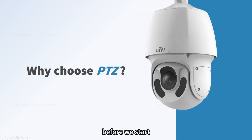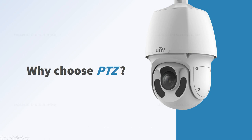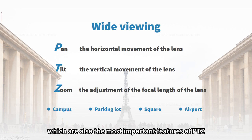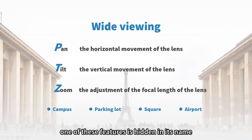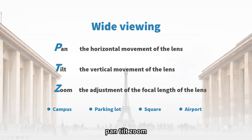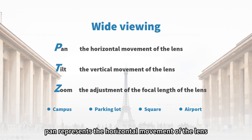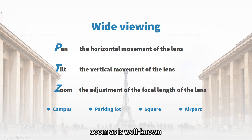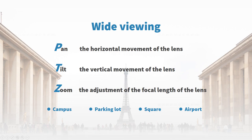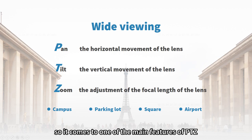Before we start, let's think about why we need PTZ and why we choose it. There are two main reasons, which are also the most important features of PTZ. One of these features is hidden in its name. PTZ is actually an abbreviation of three words: pan, tilt, zoom. Pan represents the horizontal movement of the lens, tilt means the vertical movement of the lens, and zoom means the adjustment of the focal length. This leads to one of the main features of PTZ: wide viewing.